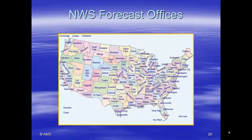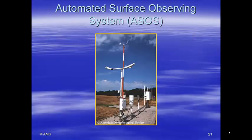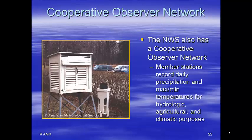Here we see a map of where the forecast offices are. We also added automated surface observing stations that record temperature, wind speed, wind direction, humidity, and pressure. We still have the cooperative observer network — member stations that record daily precipitation and maximum temperatures.